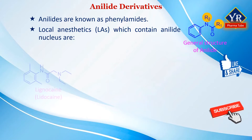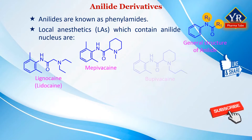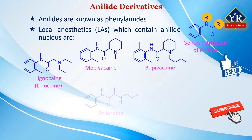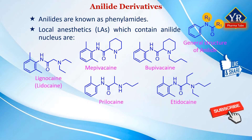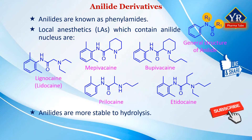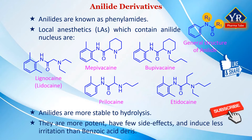Certain local anesthetics contain the general structure of anilides in their structures. For example, lignocaine, mepivacaine, bupivacaine, prilocaine, and etidocaine. These compounds are also known as lidocaine derivatives, as lidocaine is the prototype of this class of compounds. Agents of this class are more stable to hydrolysis, more potent, have lower frequency of side effects, and induce less irritation than benzoic acid derivatives.